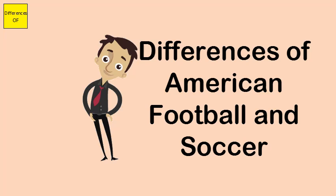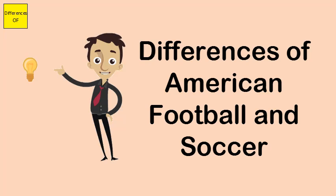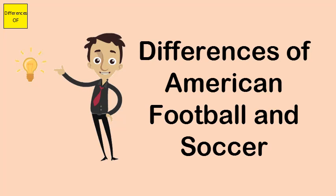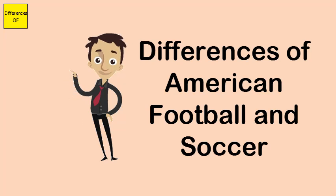American football uses a prolate spheroid ball which is about 11 inches long and about 22 inches in circumference. Soccer is played with a spherical ball. American football allows unlimited player substitutions, while soccer allows only 3 player substitutions per game.